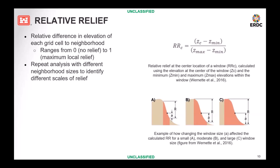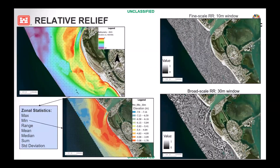This is an example of the results from relative relief analysis. In the upper left you have New Pass, Florida bathymetry from 2015. From that you can calculate zonal statistics such as the minimum and maximum for each window — in the bottom left figure that's a 30-meter window — then interpolate that to a surface and calculate fine-scale relative relief. In the upper right that's a 10-meter window looking at fine-scale geomorphic features, and in the bottom right that's the broad-scale 30-meter window where you can identify much larger features.